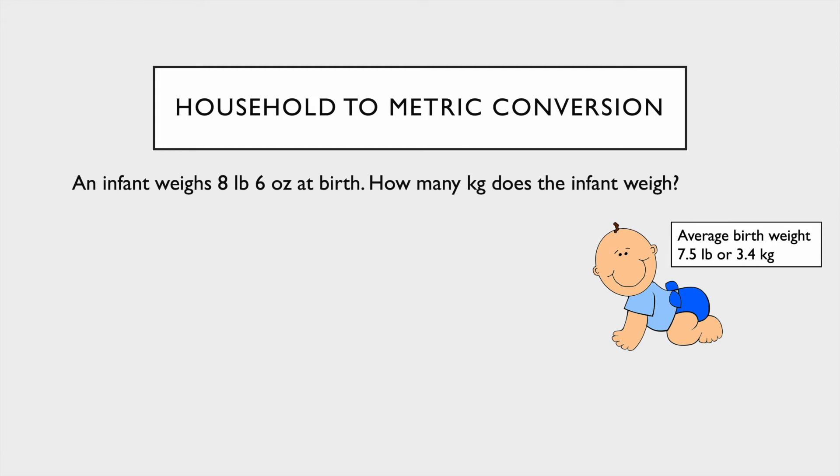For some perspective, the average birth weight is 7.5 pounds or 3.4 kilograms. So if you remember that the average weight of a baby is 3.4 kilograms and you end up with 10 kilograms, you know something's wrong because that would be like a 20 pound baby. Make sure you remember this to give yourself some perspective so you can check your answers at the end.